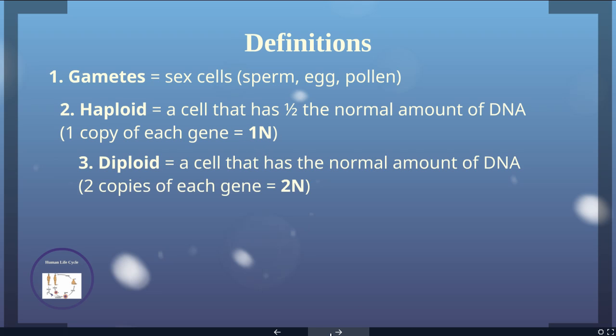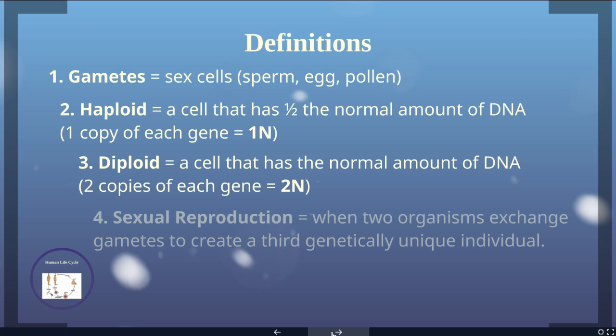Diploid — 'di' means 2 — is a cell that has the normal amount of DNA. Remember, the normal amount is two copies of each gene, so a cell with the normal amount of DNA would be a 2n cell.